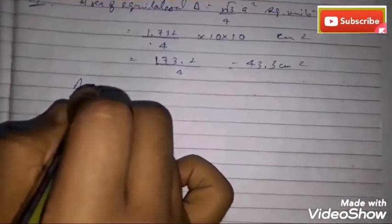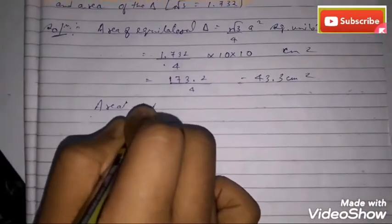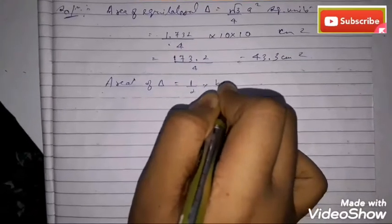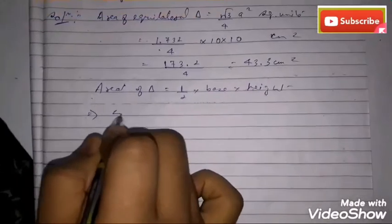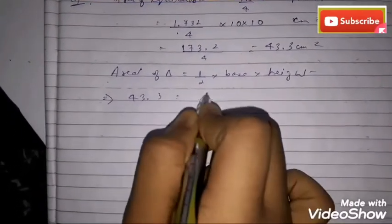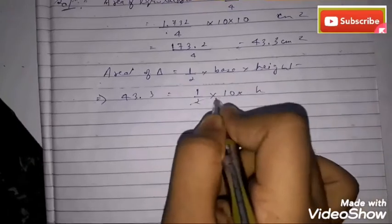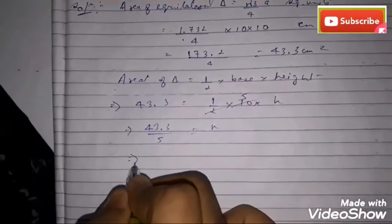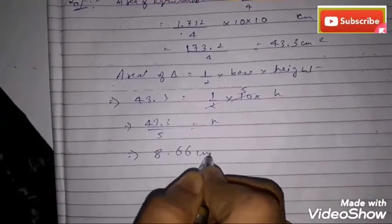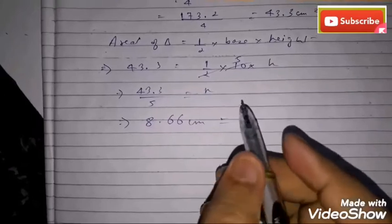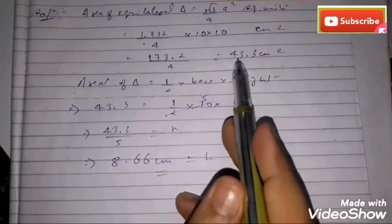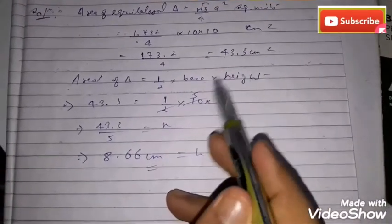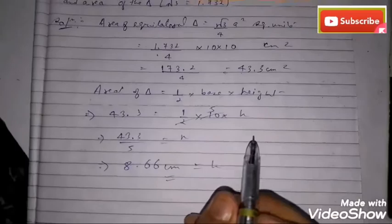Now using the formula: Area = ½ × base × height. So 43.3 = ½ × 10 × h, which gives h = 43.3 / 5 = 8.66 centimeters. Therefore, the required altitude of the triangle is 8.66 centimeters and the area of the triangle is 43.3 square centimeters. This sum is fully completed.